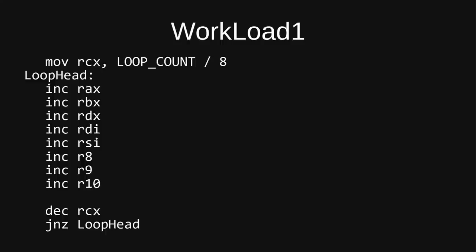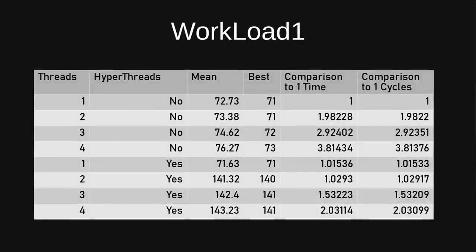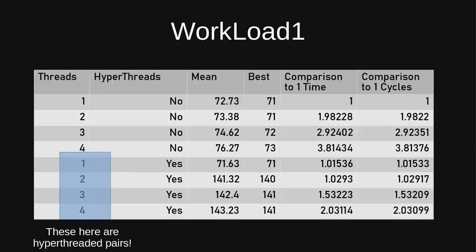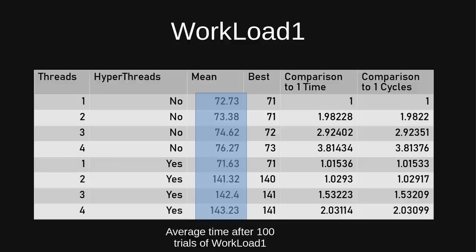This is the first workload. I've got a little unrolled loop using the INC instruction eight times. The INC instruction is executed one billion times as the counter runs through the loop — it's a general purpose integer instruction. Here's a table of the results. You can see the number of threads on the left: 1, 2, 3, 4 for multicore, then 1, 2, 3, 4 again for hyperthreading. The mean time in milliseconds for multicore is about 72, 73, 74, 76 — taking around about the same amount of time as you add threads.